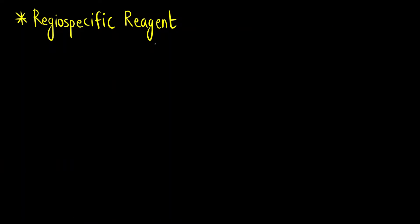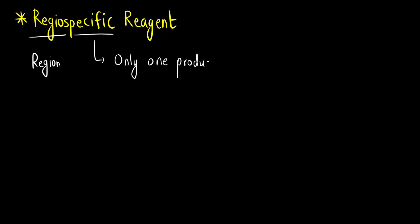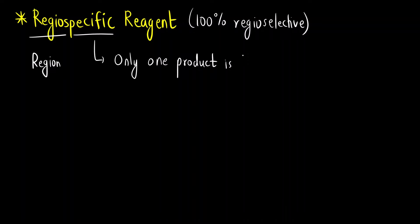Now let us see what is a regiospecific reagent. Regio means region, and specific means only one particular product will be formed — only one product will be formed. That is, only one site is attacked completely, that is 100%. This can also be called as 100% regioselective because there is only one product that is formed.